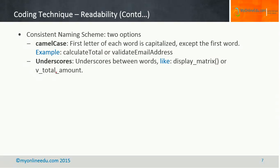There are two options. The first is camel case and the second is underscore. Camel case means the first letter of each word is capitalized except the first word. For example, calculateTotal is one function name, or validateEmailAddress is another. The word calculate starts with a small letter since it is the first word, but Total has a capital T. Similarly, E and A are capitalized as they are the first letters of email and address, while v is lowercase as it starts the first word.